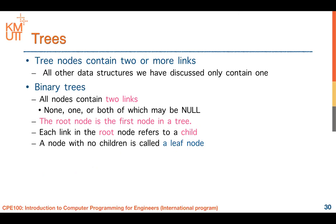We come to the last topic of today - trees. Trees are very useful in data structures with many applications. Tree is another representation of the linked list, but tree nodes contain two or more links. Our other data structures we discussed contain only one link, except the doubly linked list. For a tree, you can have two or more links. The most popular tree is the binary tree - binary means two, so all nodes contain just two links.